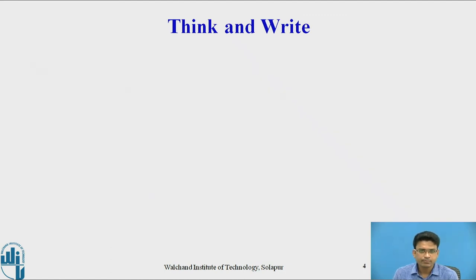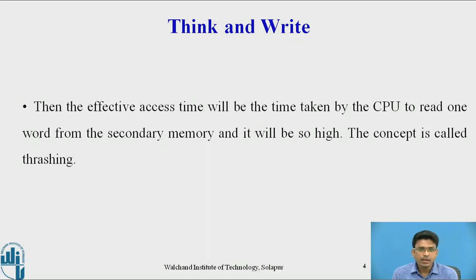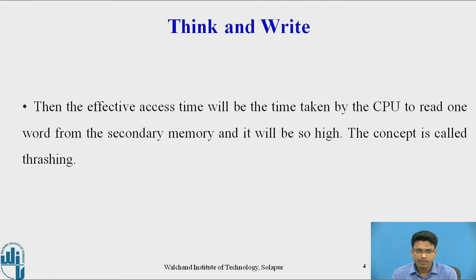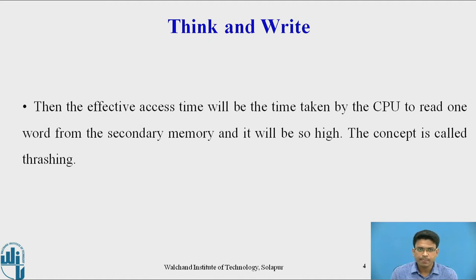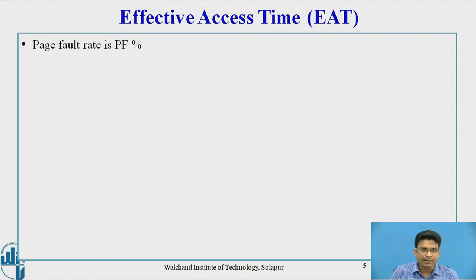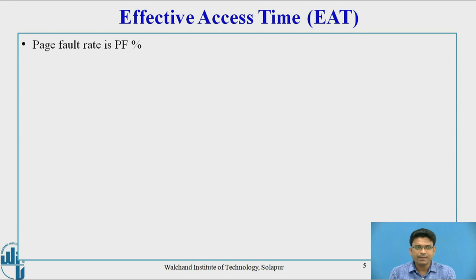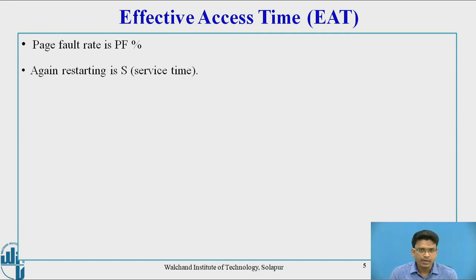Now, what if the number of page faults is so high and the CPU remains busy just reading pages from secondary memory? Then the effective access time will be very high. That concept is called thrashing. Thrashing happens when too many page faults occur. A page fault means the page being looked for is currently not available in any frame.